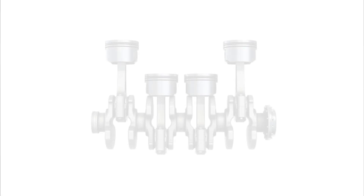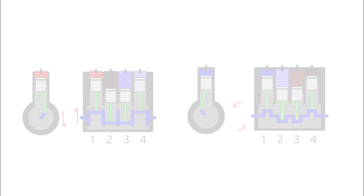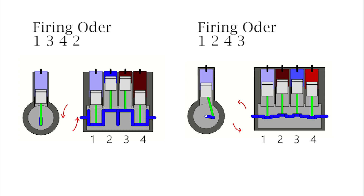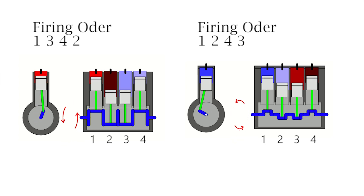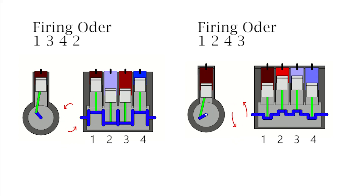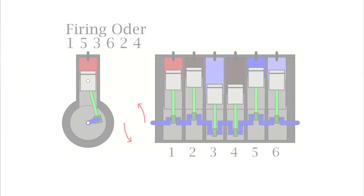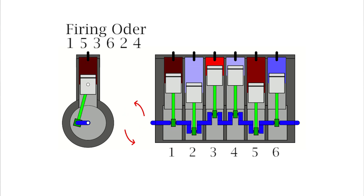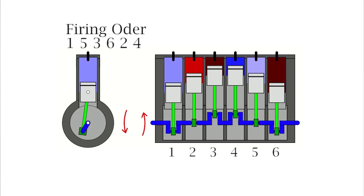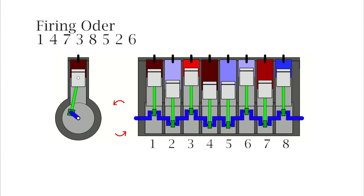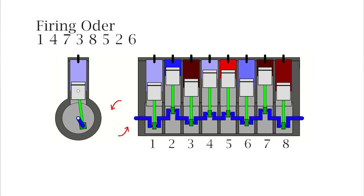The Firing Mode: This is the case of the 4-cylinder engine. The 4-cylinder engine firing orders are 1342 and 1243. We are going to use 1342. The 6-cylinder engine is 153624. The 8-cylinder engine is 1473-8526. Every time you have to use these firing orders.